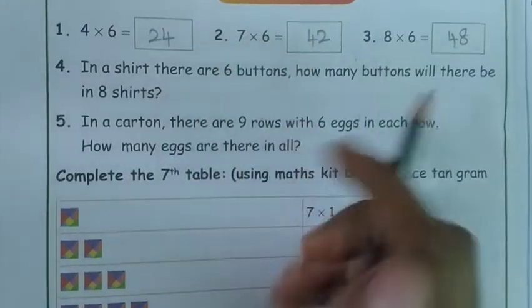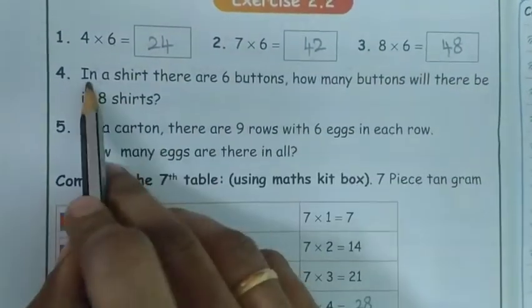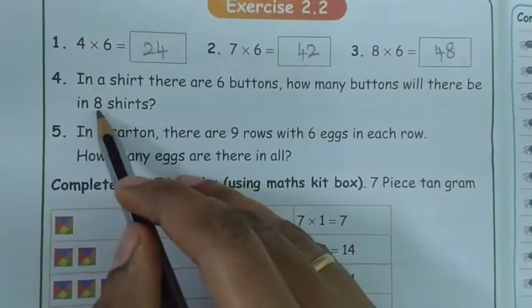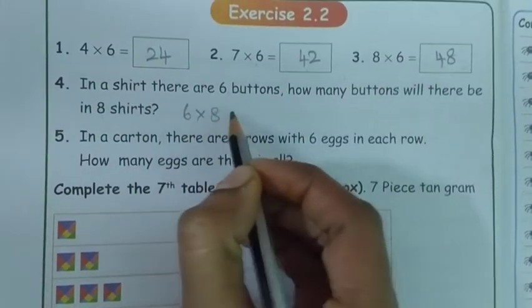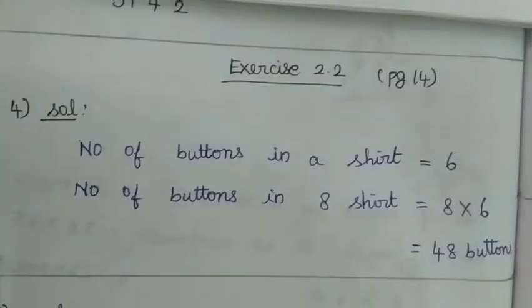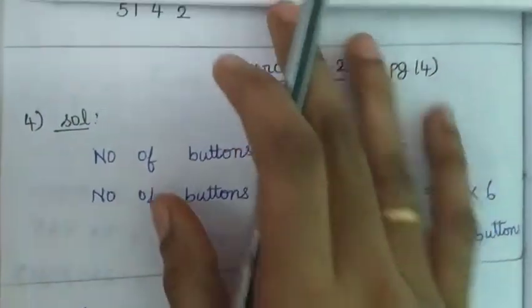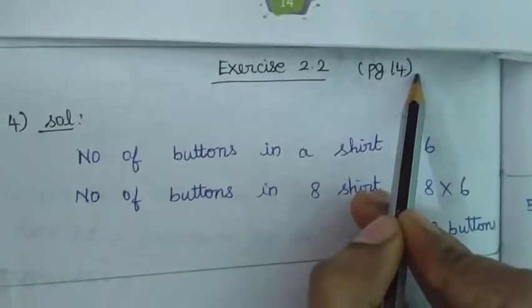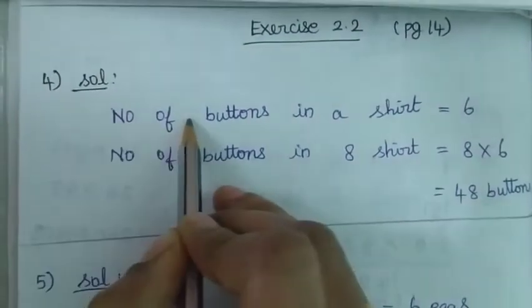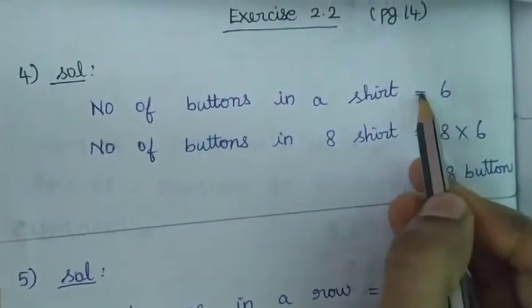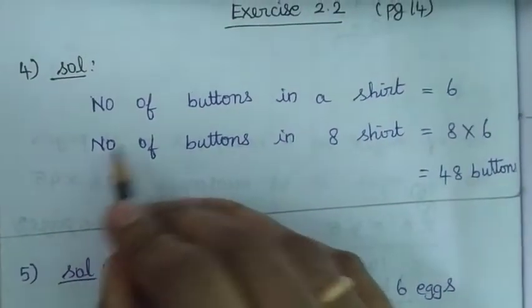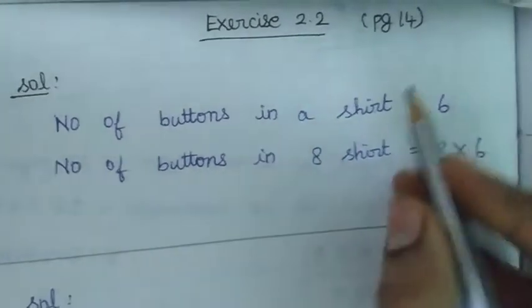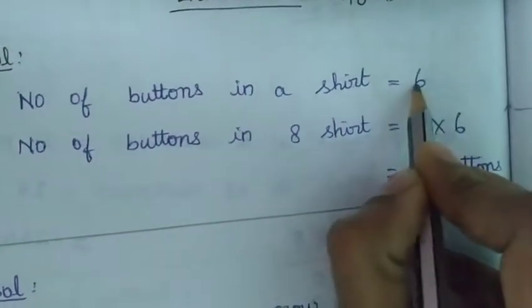One shirt having 6 buttons means how many buttons will there be in 8 shirts? We just want to multiply 6 into 8. That means 6 eights are what? Take the note and write exercise 2.2, page number 14, fourth sum. Number of buttons in a shirt: 6. We want to find out the number of buttons in 8 shirts, so we multiply 8 into 6.